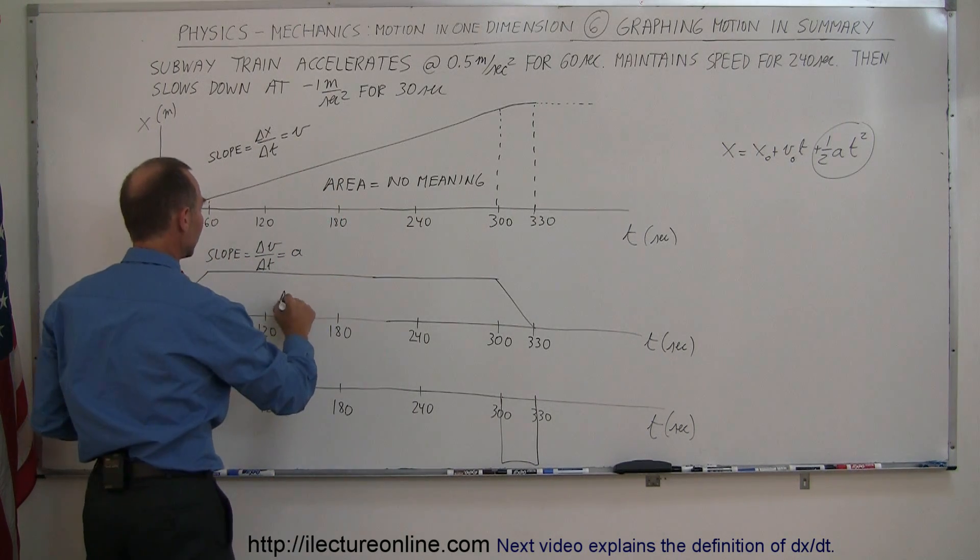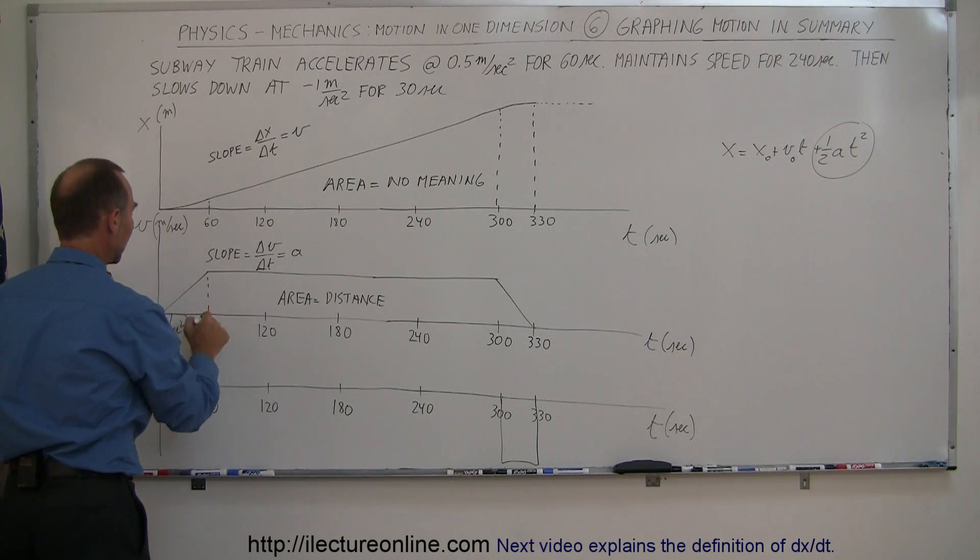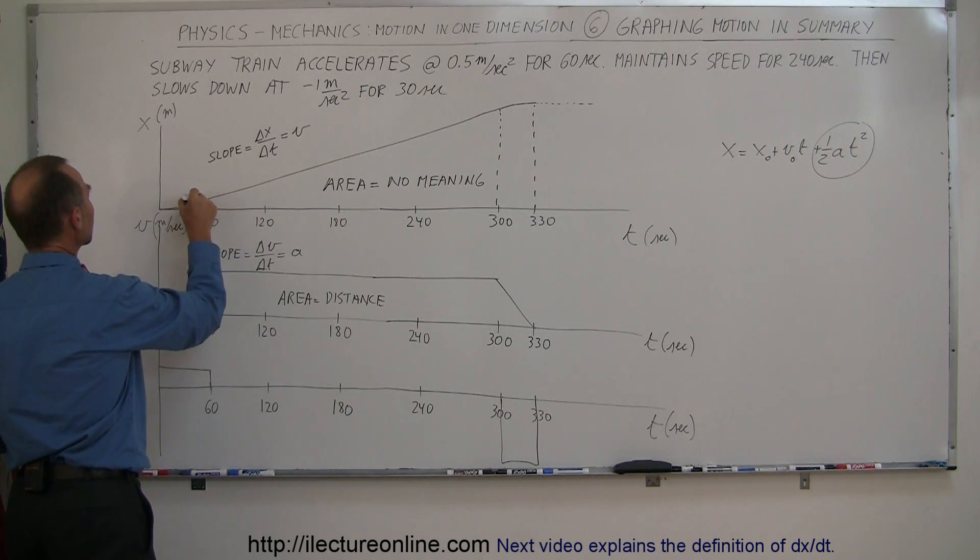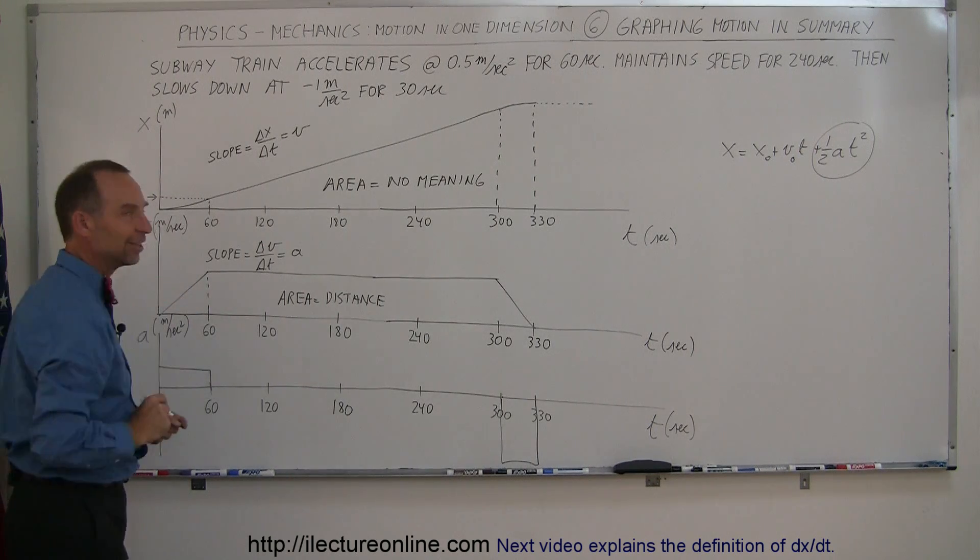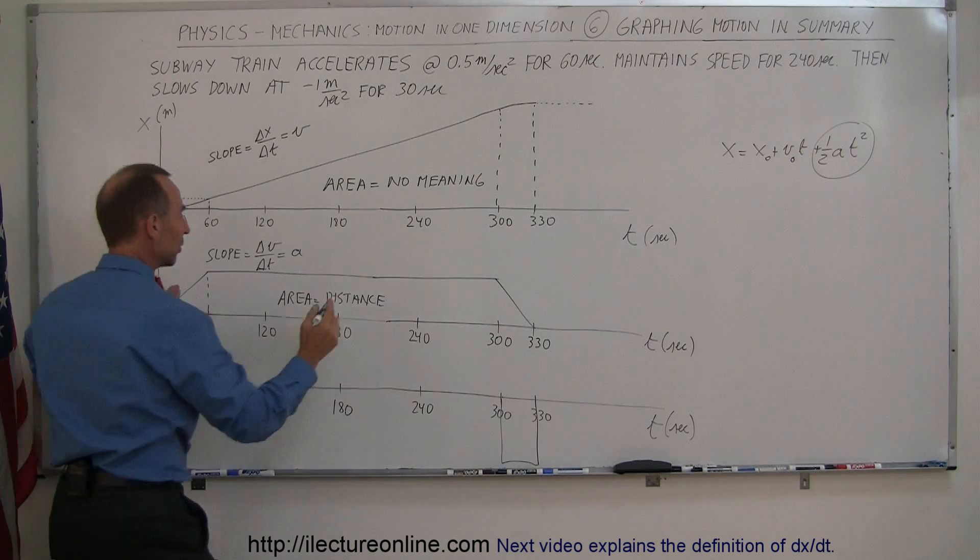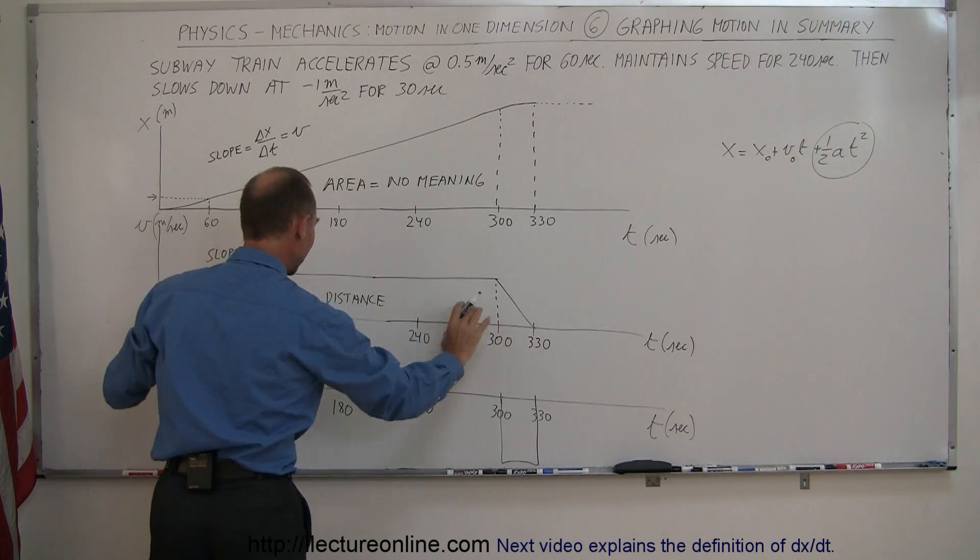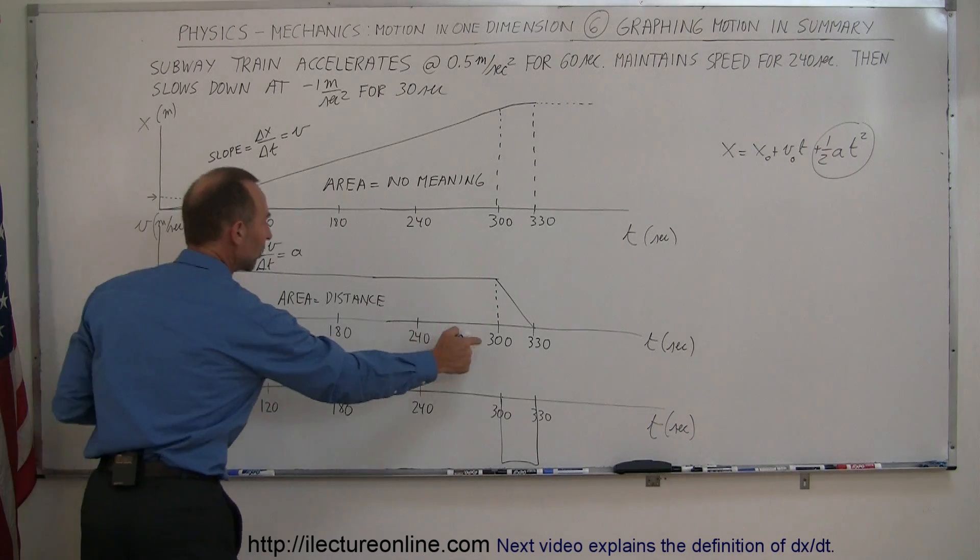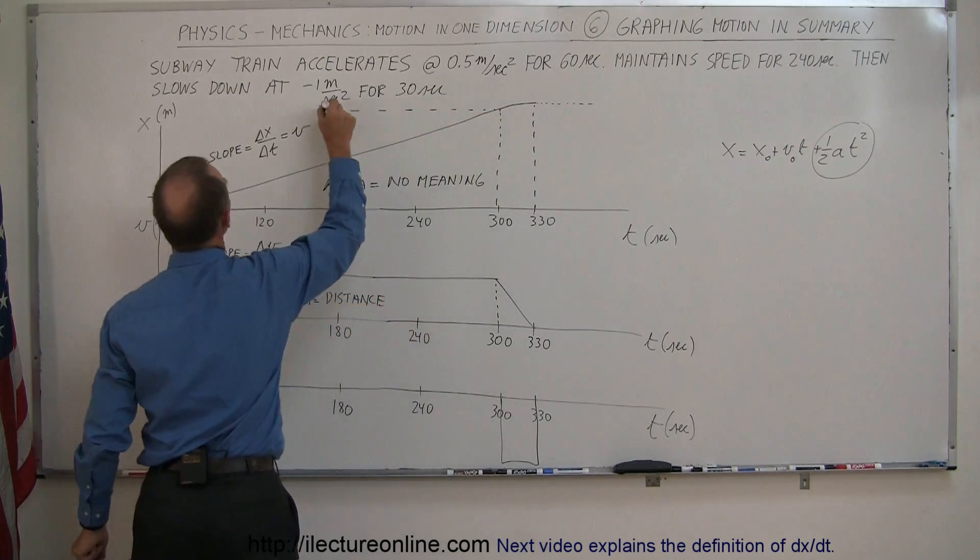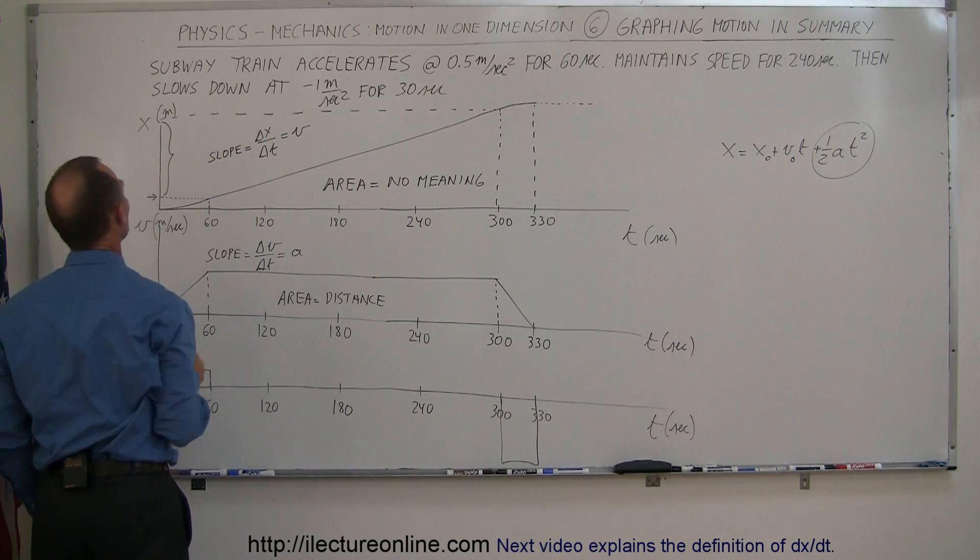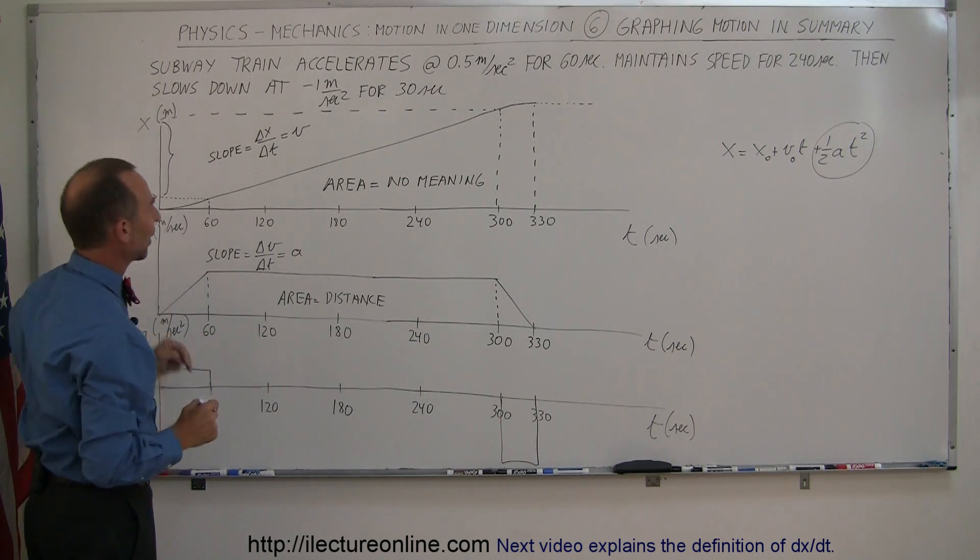The area underneath the curve represents distance traveled. Notice, the area underneath here represents the distance traveled in the first 60 seconds. This quantity right there is determined by the area in this rectangle. Then the area traveled during the 240 seconds where the speed doesn't change, that rectangle right here, the 240 seconds times 30 meters per second represents the distance traveled during this time period. We add the first area plus the second area.